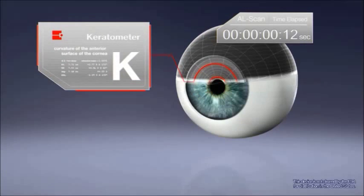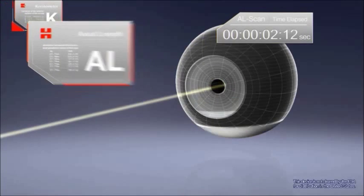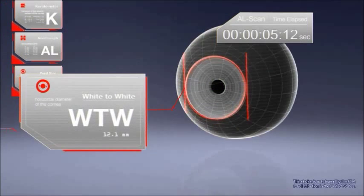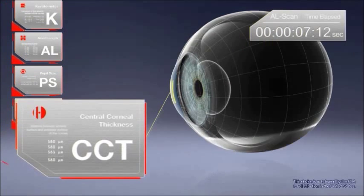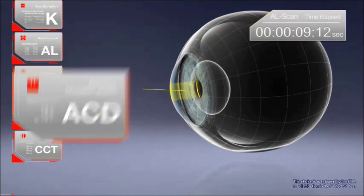Corneal curvature radius, axial length, pupil size, white-to-white distance, central corneal thickness, and anterior chamber depth.